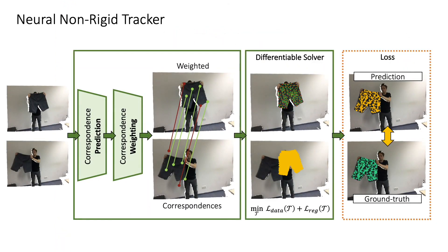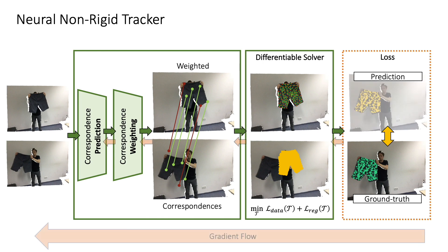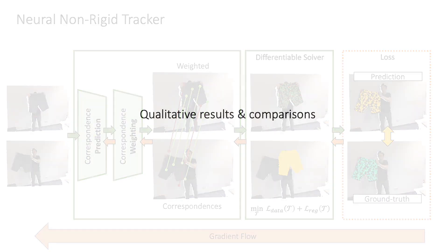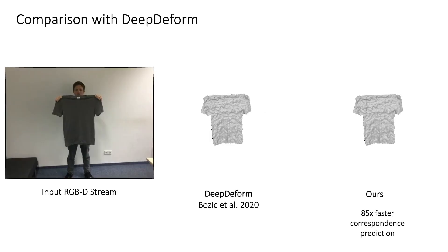Finally, we define a loss to encourage the estimated deformation to be close to the ground truth. Gradients can then flow through the differentiable solver and better inform the correspondence prediction and weighting networks, as we show in our ablation studies in the paper. In the following, we show qualitative reconstruction results.